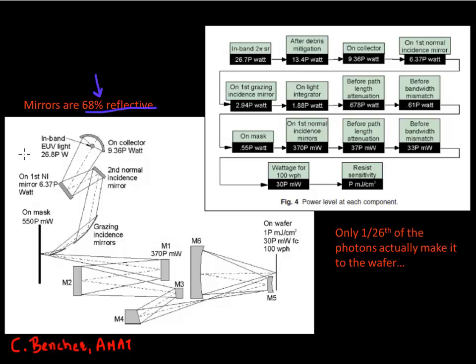So suppose you were starting with a light source which had an energy of around 27 watt. By the time you get to your first mirror, what you're left with is just 6 watt. And by the time you get to your mask, what you're left with is just 550 milliwatt.